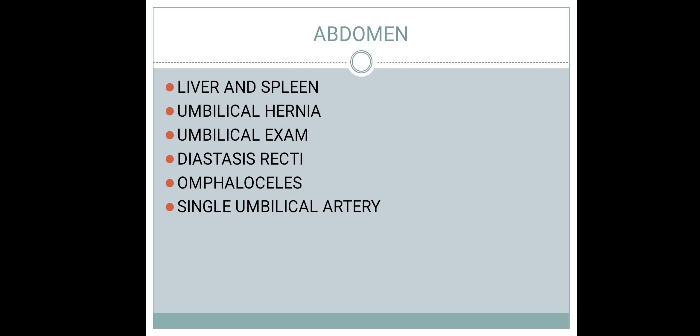Examine the abdomen of the child. Generally, the liver will be palpable 2 to 3 centimeters below the right costal margin — this is not hepatomegaly, it is a normal phenomenon. The tip of the spleen can also be palpable normally. Hepatomegaly and splenomegaly up to 3 cm of liver and 1 cm of spleen is normal. The umbilicus examination is very important.